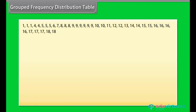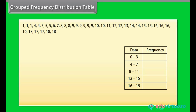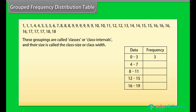Grouped frequency distribution table: Sometimes we have a large amount of data, so to present it we condense it into groups like 0 to 3, 4 to 7, and so on till 16 to 19. These groupings are called classes or class intervals, and their size is called class size or class width.